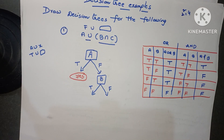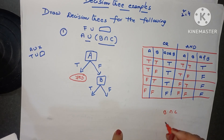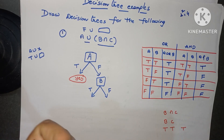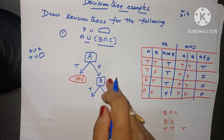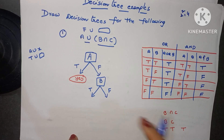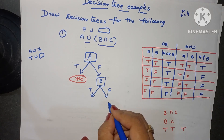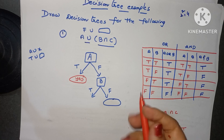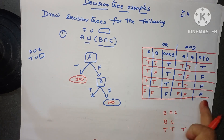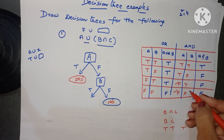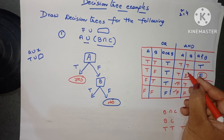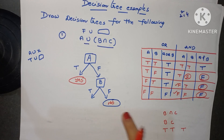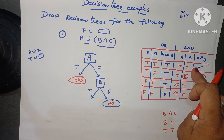If B is true, then B intersection C with B true — we continue. If B is false, then false AND anything — any one is false, the total result is false. So if B is false, we close it — not necessary to think about the next one — the result is totally false. False AND false is always false.